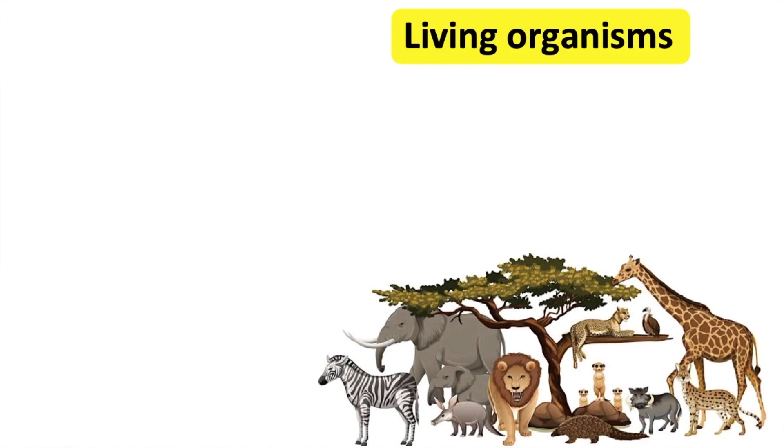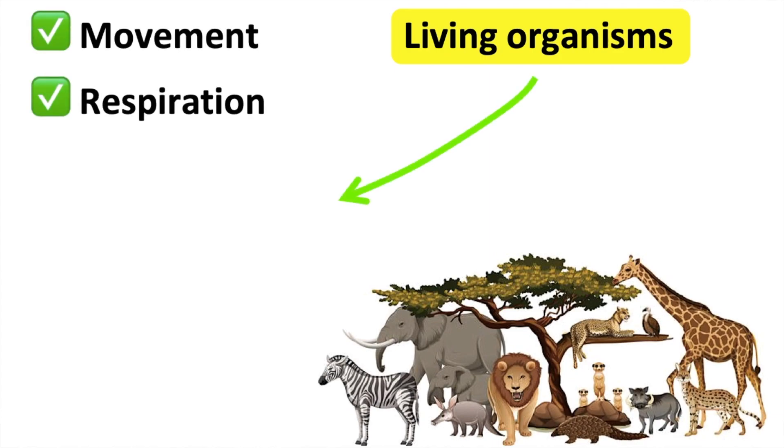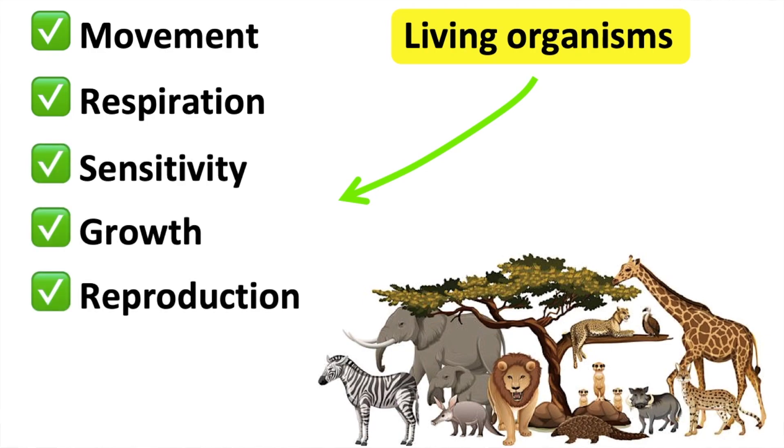Living organisms have life processes. Organisms need to do these in order to be counted as being alive. These processes are movement, respiration, sensitivity, growth, reproduction, excretion and nutrition.